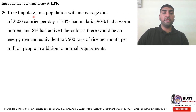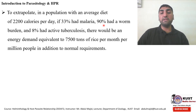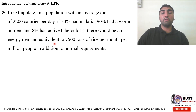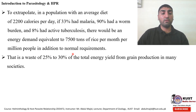To extrapolate: in a population with an average diet of 2,200 calories per day, if 33% of the people had malaria, 99% had a worm burden, and 8% had active tuberculosis, there would be an energy demand equivalent to 7,500 tons of rice per month per million people in addition to normal requirements. That represents a waste of 25% to 30% of the total energy yield from grain production in many societies.